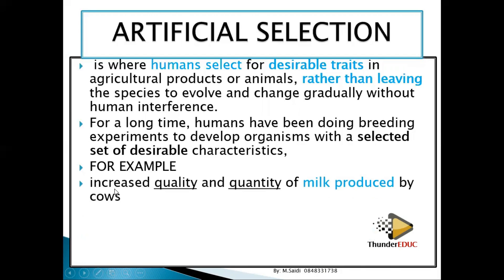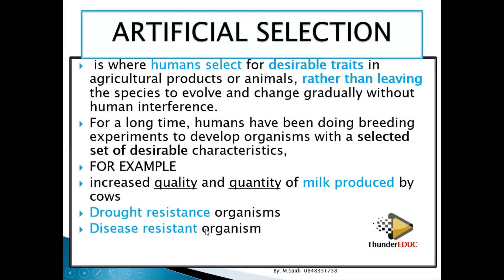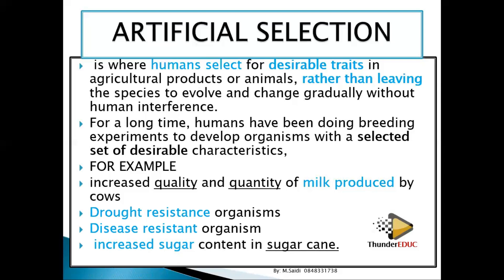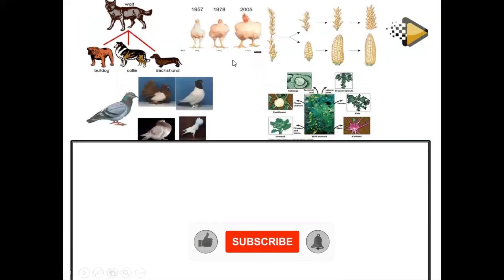Examples of the benefits of artificial selection include: first, increasing the quality and quantity of milk produced by cows. Second, developing drought-resistant organisms — selecting those which can resist droughts. Third, disease-resistant organisms — selecting those which can resist diseases. And fourth, increasing the sugar content in sugar cane, so that a small sugar cane plant can produce a large amount of sugar.